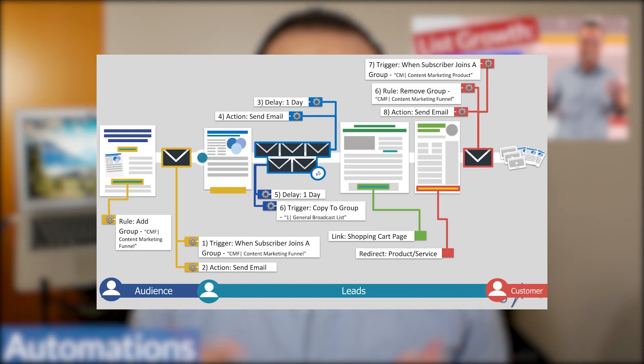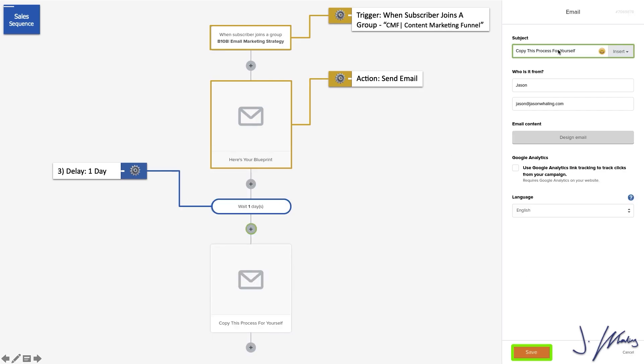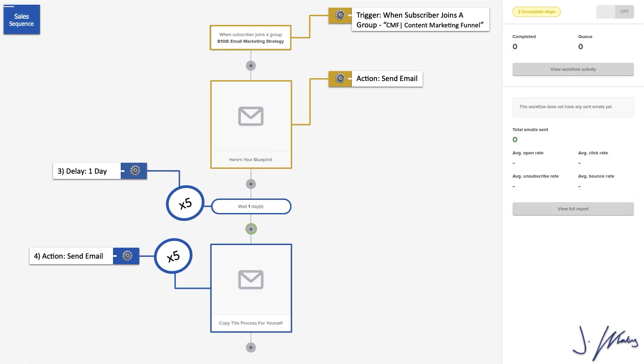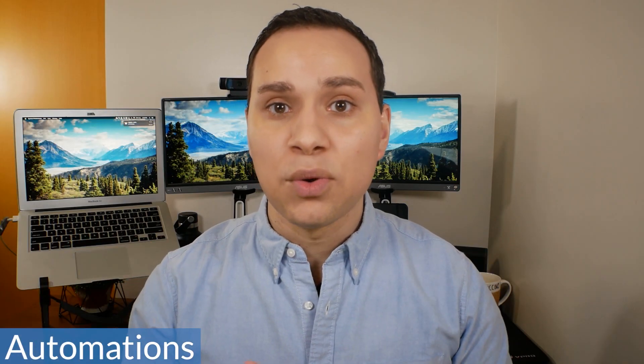All of these automations are possible with the free version of MailerLite. You can move subscribers to a group of people who are getting a product pitch, then remove that group — they don't use tags, they use groups — and add them to a group representing people who actually purchased. Or maybe you send out promotional emails via broadcast and automatically add anyone who clicks a link to a sales sequence to sell them a product, service, or affiliate offer.